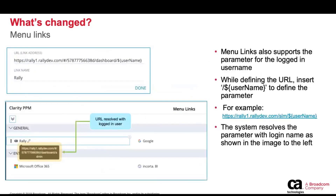Menu links also supports a parameter — it supports the logged-in username. When you define that URL, you pick the target page you want, and then you simply append the link with the username parameter. The lower screenshot is really just an example of how the system resolves it — in this example, it's the admin as the logged-in user. This gives you great capability when integrating with third-party systems to filter the target page based on the logged-in username.